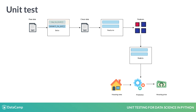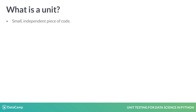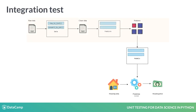The tests that we wrote are called unit tests because they test a unit, such as row_to_list. A unit is any small independent piece of code and could be a Python function or class. In contrast, integration tests check if multiple units work well together when they are connected, and not just independently.